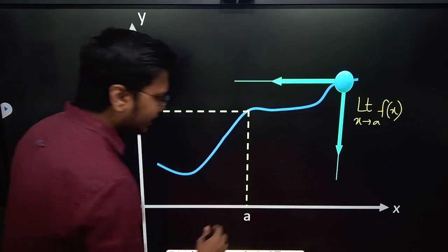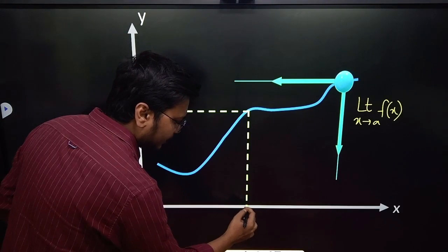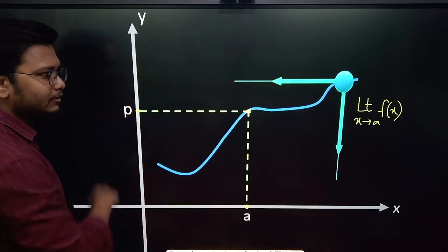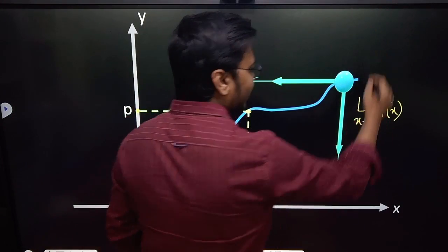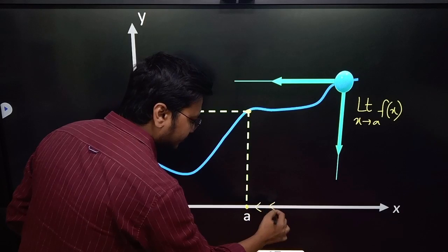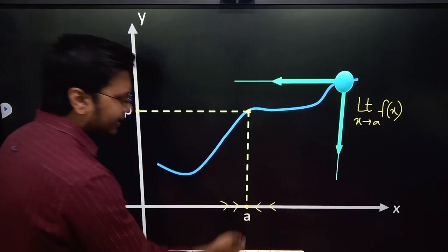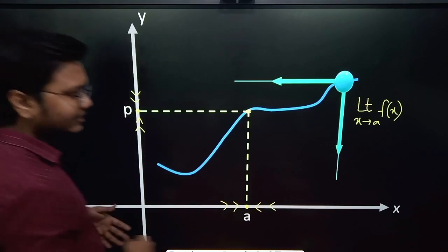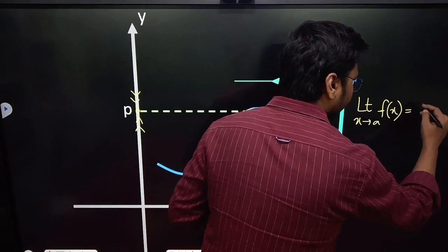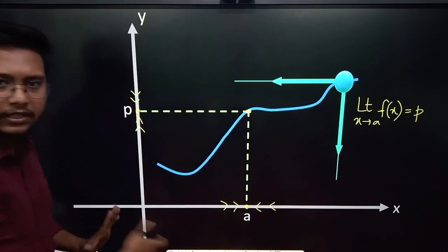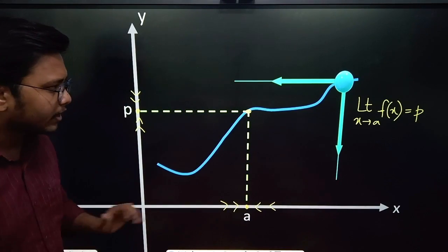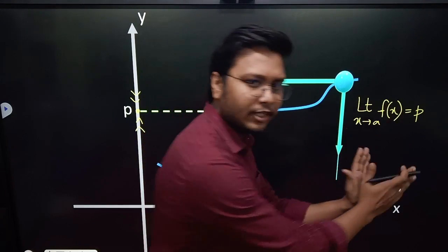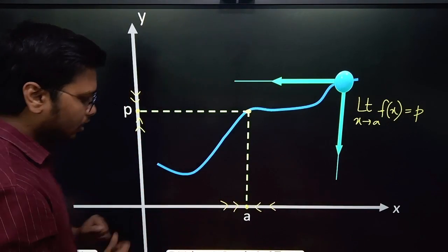Let me quickly assume that when x is tending to a, the output of the function is p. That means when the limit of x tending to a, either from the left side or from the right side, every time I am approaching the value p along the y-axis. Let me assume the value is p, as per the diagram I have here. Now I want to create a definition of this.